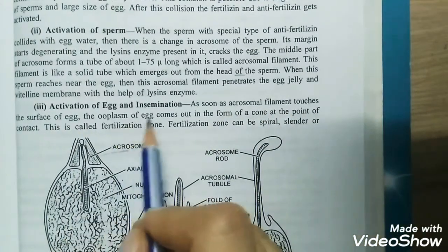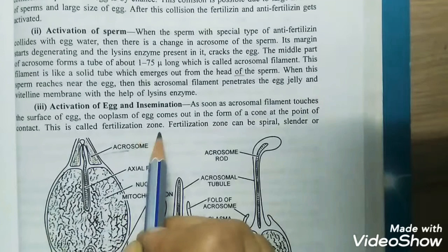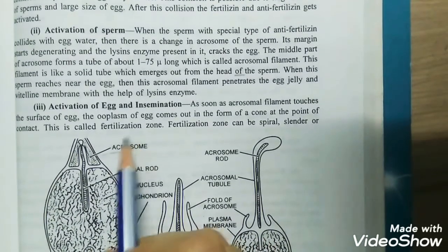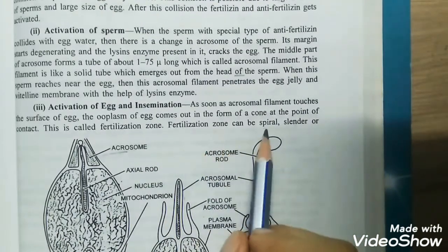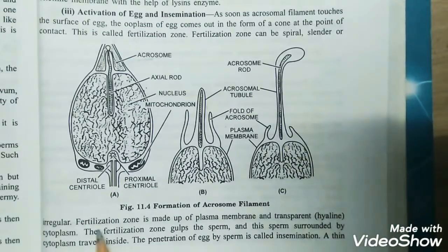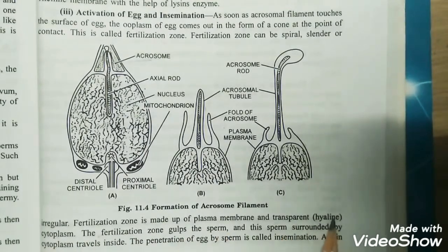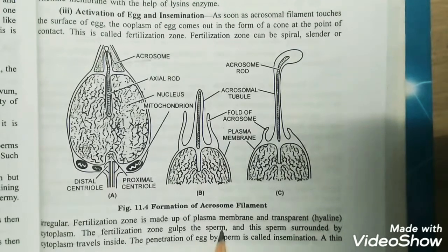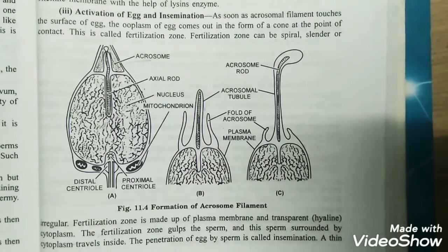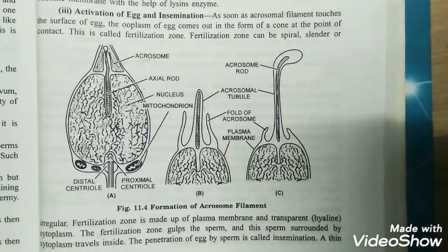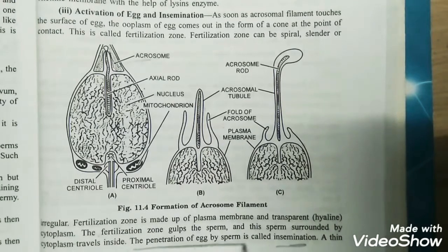Next is activation of egg and insemination. As soon as the acrosomal filament touches the surface of the egg, the ooplasm of the egg comes out in the form of a cone at the point of contact. This is called the fertilization cone. The fertilization cone can be spiral, slender, or irregular. It is made up of plasma membrane and transparent hyaline cytoplasm. The fertilization cone engulfs the sperm, which then travels inside surrounded by cytoplasm. The penetration of the egg by the sperm is called insemination.